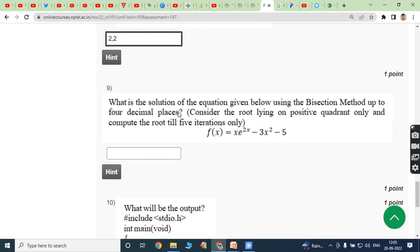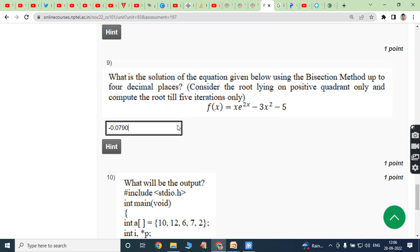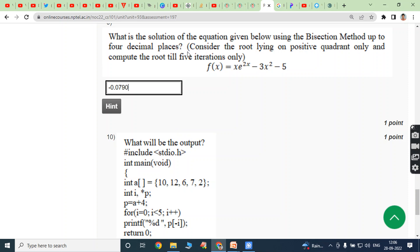Next one, ninth bit: What is the solution of the equation given below using bisection method up to 4 decimal places? So after solving this equation by using bisection method, so we are getting the answer minus 0.0790. This can take approximately 10 to 15 minutes for solving this problem. So after solving, whatever the answer we are getting, we are placing that answer minus 0.0790.